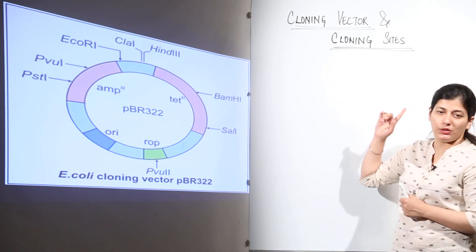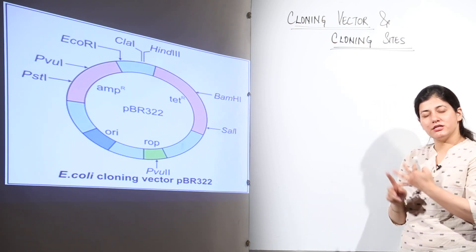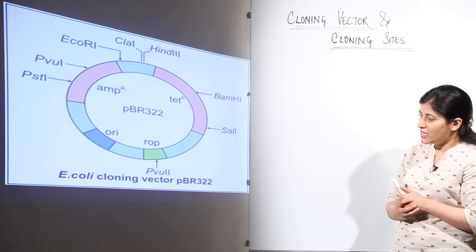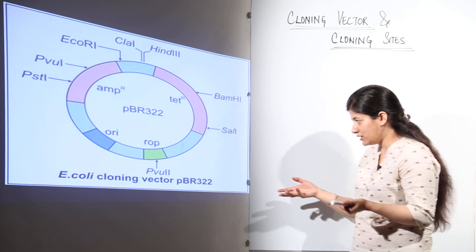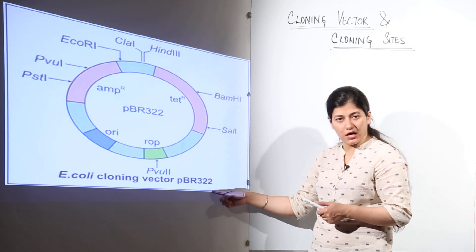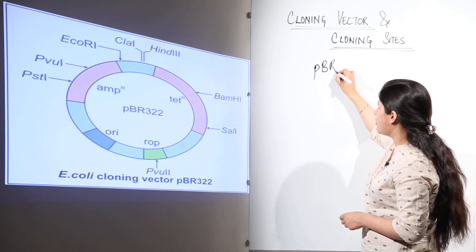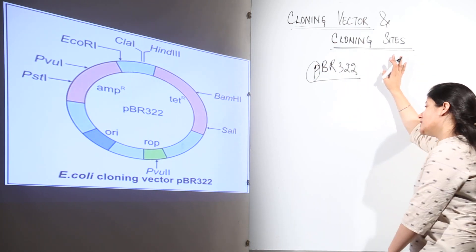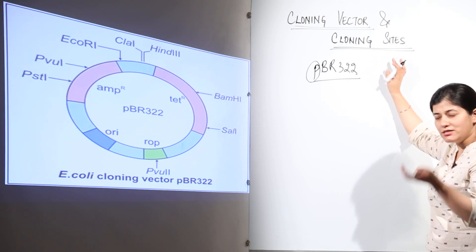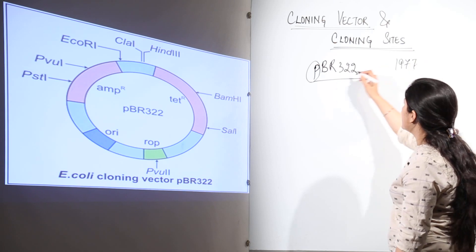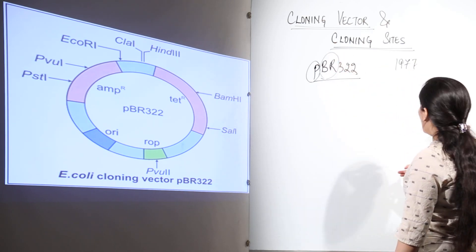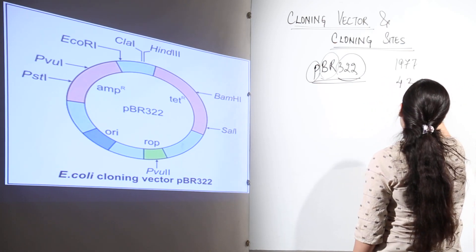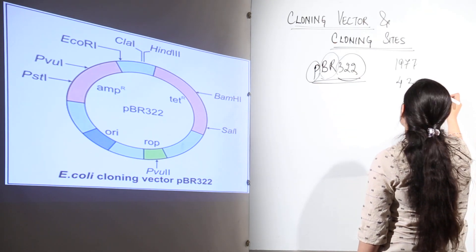Now we're going to talk about cloning vectors and their cloning sites. We need a vector to act as a selectable marker, and it must have cloning sites inside it. The E. coli cloning vector represented here is a plasmid known as PBR 322 — a widely used cloning vector for the host E. coli. It was created in the lab of Herbert Boyer in 1977; BR stands for Bolivar and Rodriguez, and 322 is its number. This plasmid has 4361 base pairs, making it a small and easily studied cloning vector.